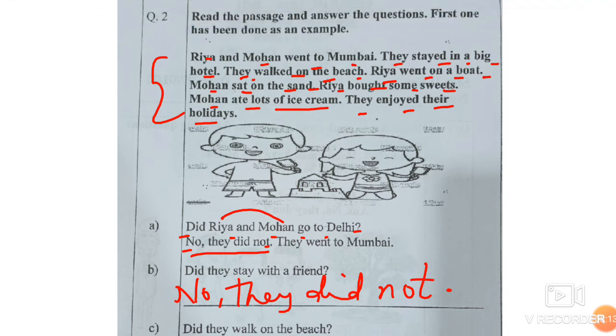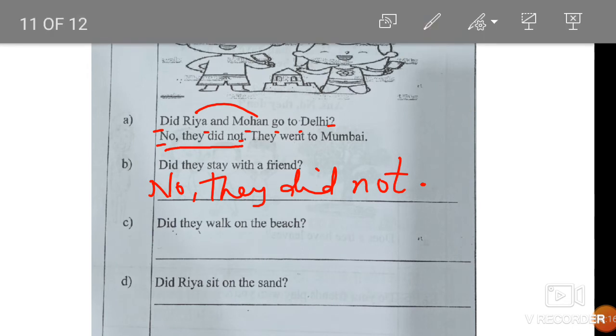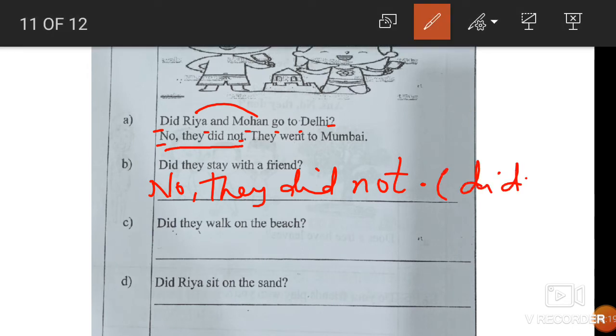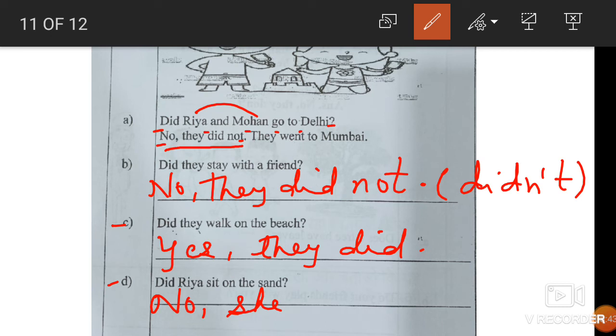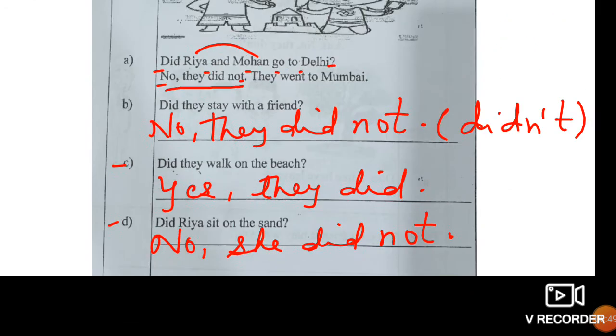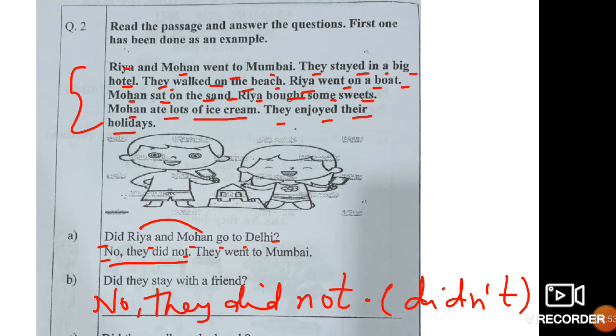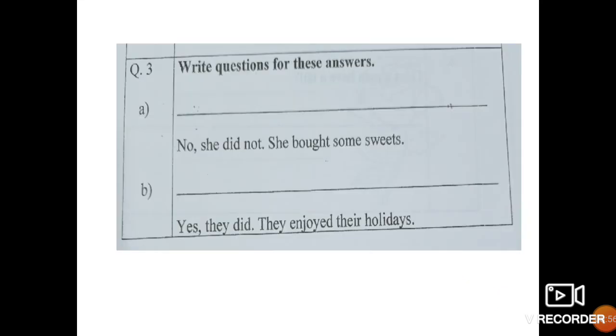Next. Did they walk on the beach? Did they walk on the beach? Yes they did. Yes, they did. Both walked on beach. Good. Did Riya sit on the sand? No, Mohan was sitting. No, she did not. There's last question children.